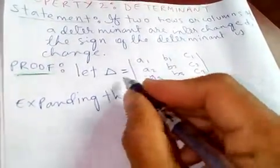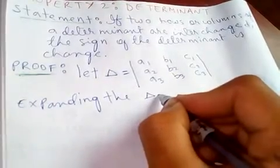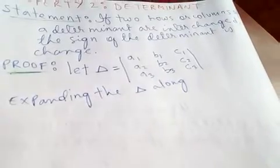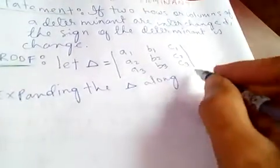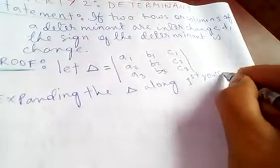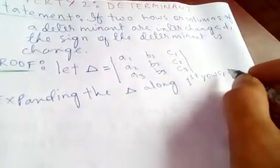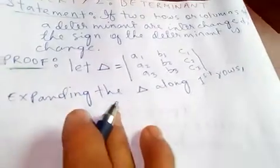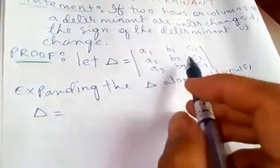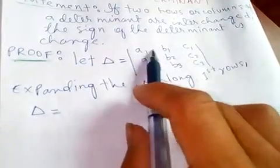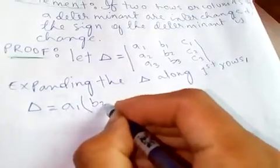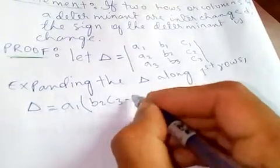Let's expand the determinant Delta. I'm going to expand along the first row. Taking the first row: a1 times the minor — which gives b2·c3 minus b3·c2.